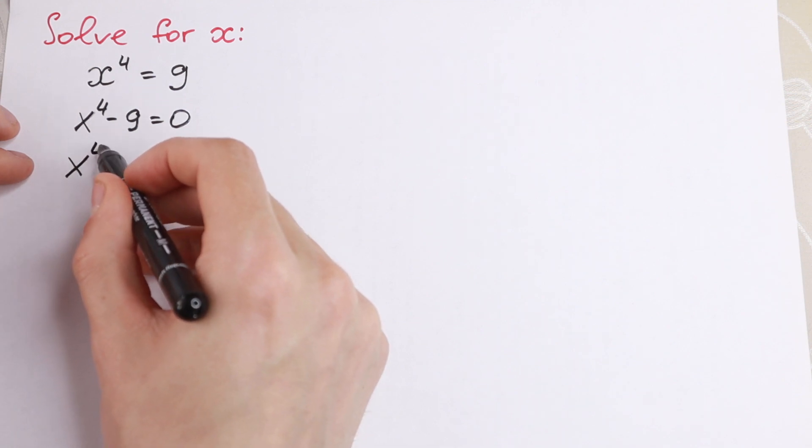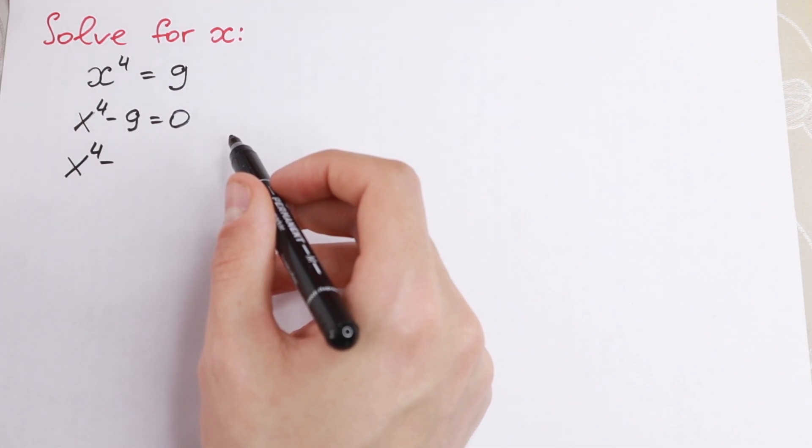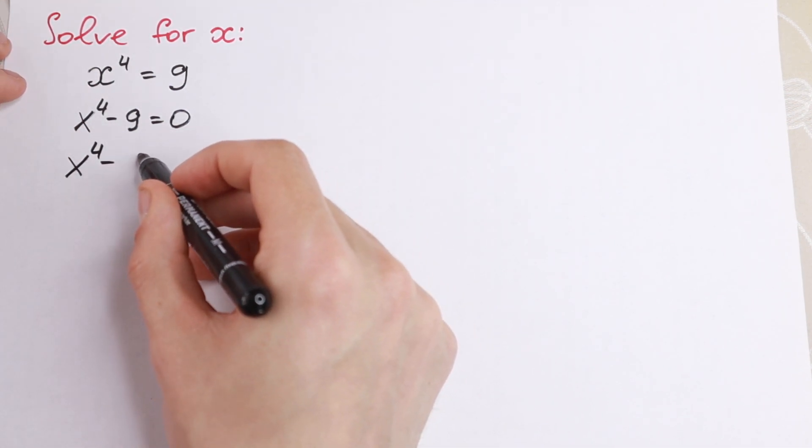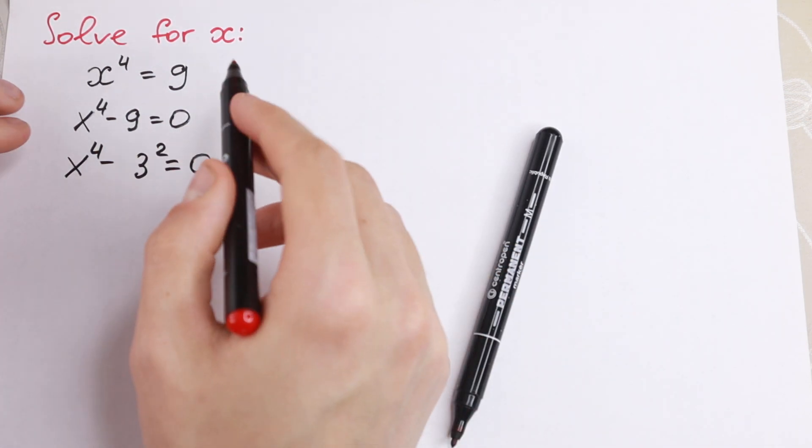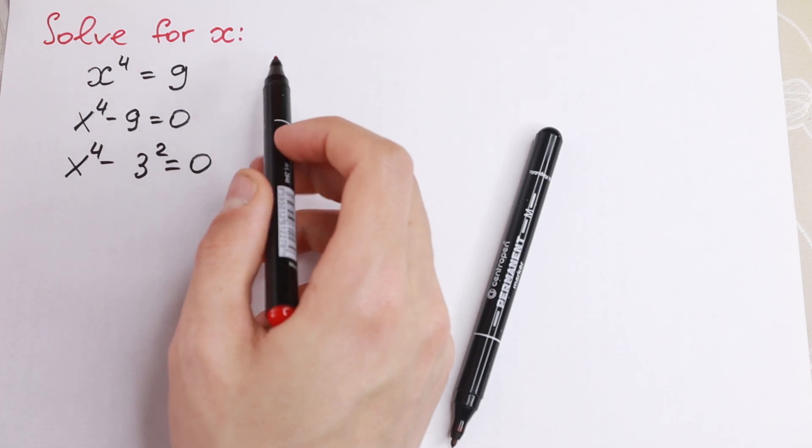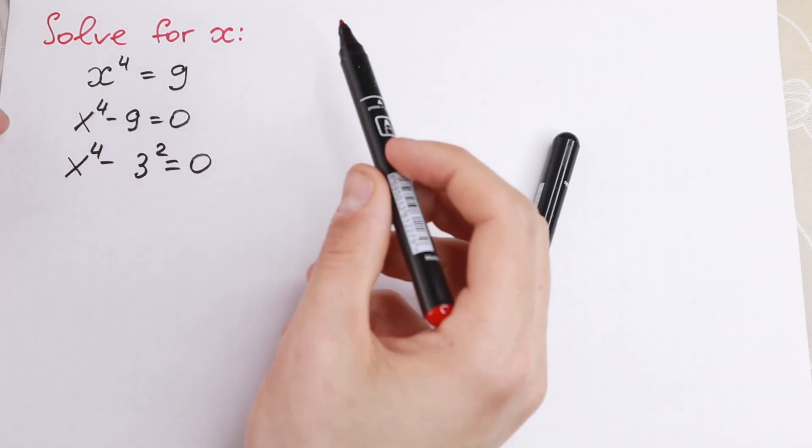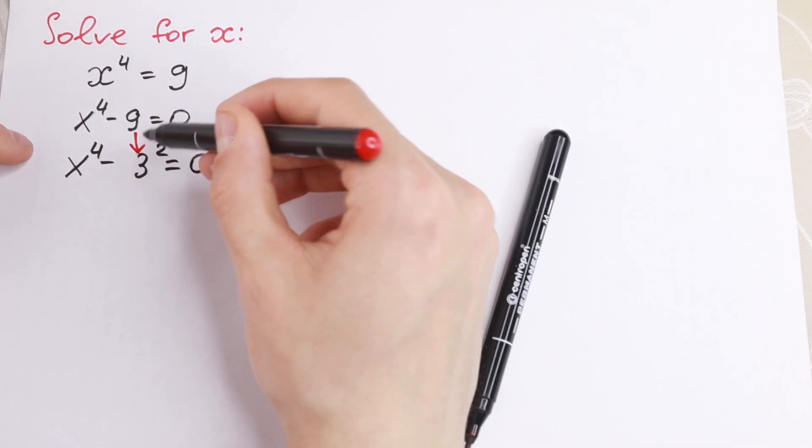We find x to the fourth power minus, and this 9 we write as 3 squared. So let's do 3 squared equal to 0. What I just did, I don't take fourth root from both sides, I just bring this 9 on the left and write this 9 as 3 squared.